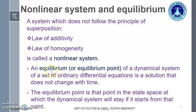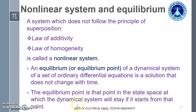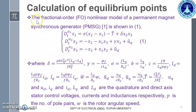What is an equilibrium point? An equilibrium point of a dynamical system — a set of ordinary differential equations — is a solution that does not change with time. The equilibrium point is that point in state space at which the dynamical system will stay if it starts from that point. There is a tendency of the dynamical nonlinear system to converge to or stay at the equilibrium point.